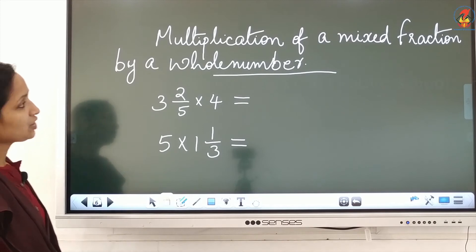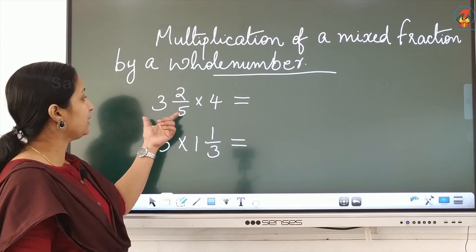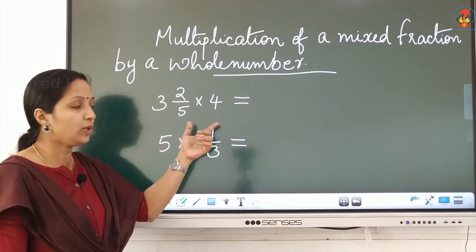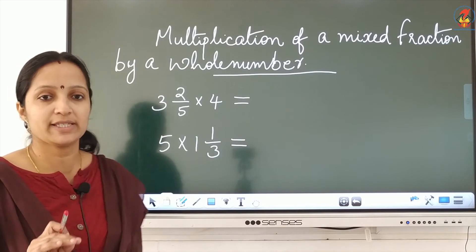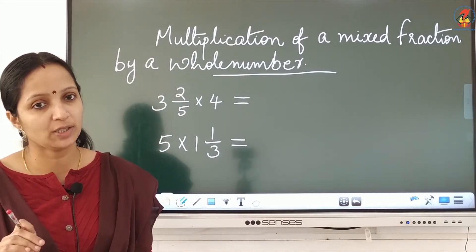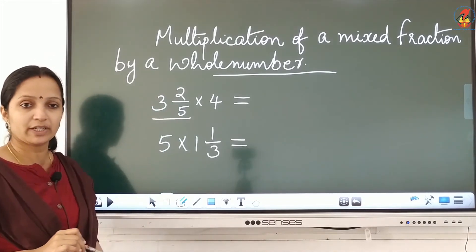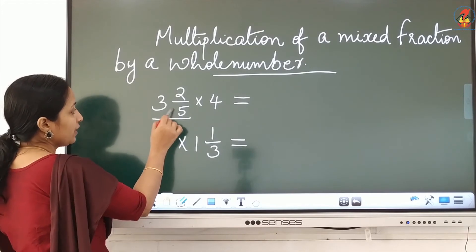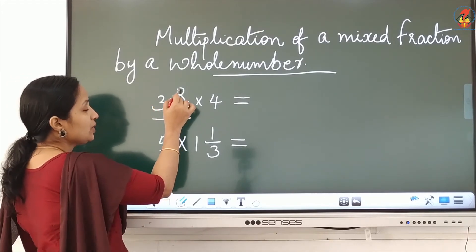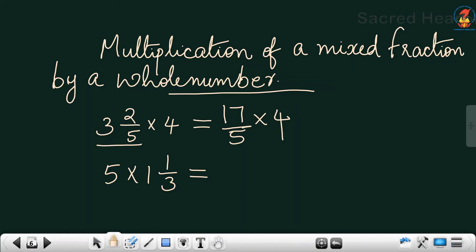Now: multiplication of a mixed fraction by a whole number. If there is a mixed fraction in the question, the first step is to convert that mixed fraction into an improper fraction. For example, convert the mixed number: multiply 5 into 3 to get 15, then 15 plus 2 equals 17, giving 17 by 5. Now multiply 17 by 5 into 4.